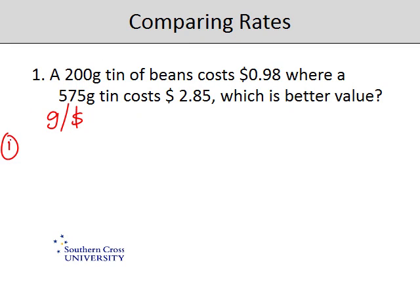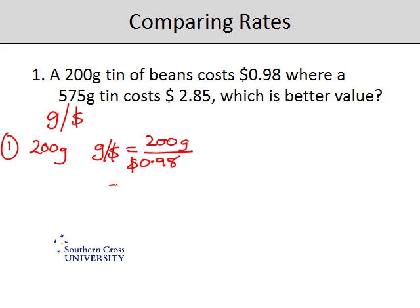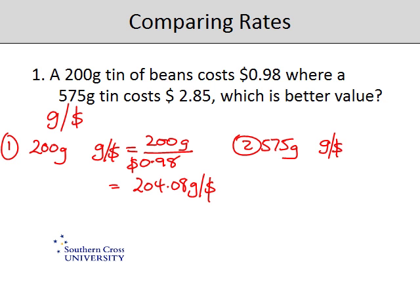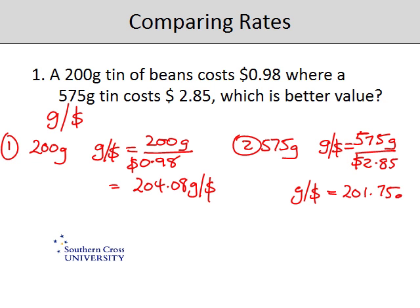For the first size tin, which is 200 grams, the grams per dollar rate is 200 grams over $0.98, which comes out at 204.08 grams per dollar. For the second size tin, the 575 gram tin, the rate of grams per dollar is 575 grams over $2.85, which comes out at 201.75 grams per dollar.